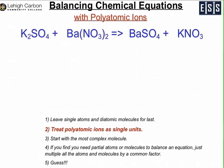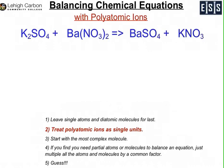Step number two is to treat them as single units. In this case, the example we're using is potassium sulfate reacting with barium nitrate to give you barium sulfate and potassium nitrate. You might recognize this as a double replacement reaction, where the anions switch places. The sulfate ion was originally associated with potassium and after the reaction is now associated with barium, and the nitrate was originally associated with barium and is now associated with potassium.